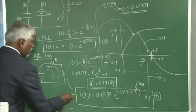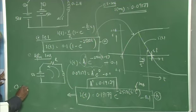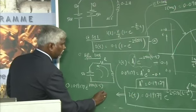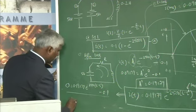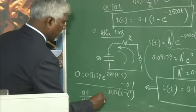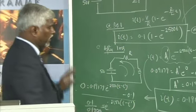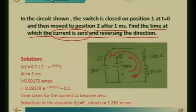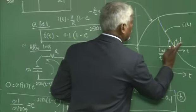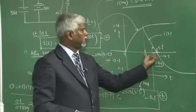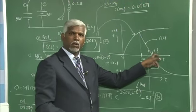Setting i(t) = 0: 0 = 0.19179·e^(-2500(t-T')) - 0.1. Solving: 0.1/0.19179 = e^(-2500(t-T')). Taking natural log and simplifying gives t = 1.261 ms total, meaning approximately 0.261 ms after the switch moves to position 2, the current crosses zero and begins reversing direction.